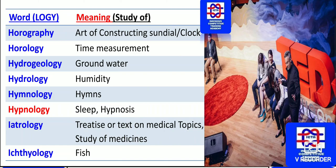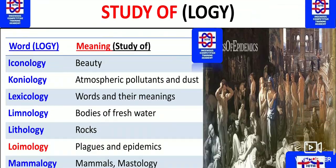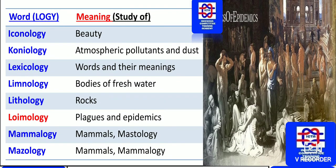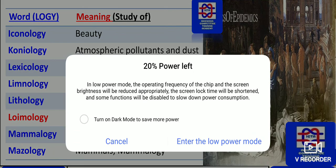The study of fish is known as ichthyology. The study of beauty is known as iconology. The study of atmospheric pollutants and dust is known as koniology. Lexicology concerns words and their meanings — a lexicographer is good with words and making dictionaries, so lexicology is the study of words and their meanings.